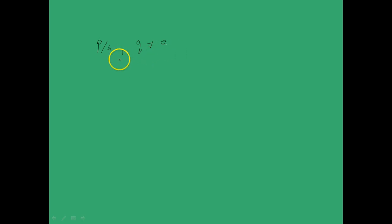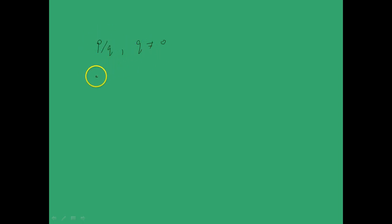Now one question might pop into your head: what are the numbers which cannot be represented in the form P by Q where Q is not equal to 0? Are they even possible? The answer is yes — these numbers are possible and they are called irrational numbers. Irrational numbers would be say root 2, root 3, pi, and 0.10010001... etc.